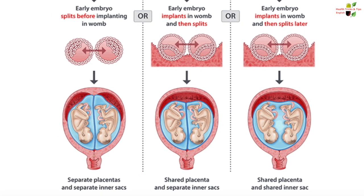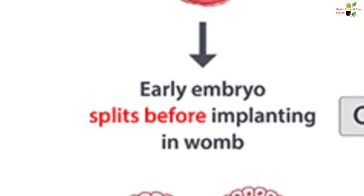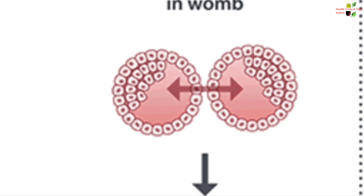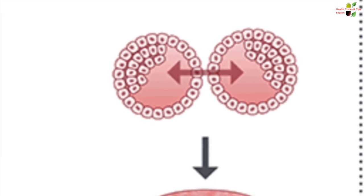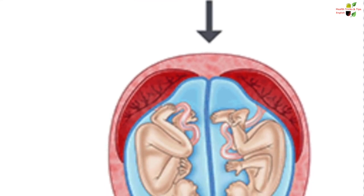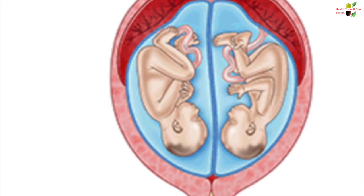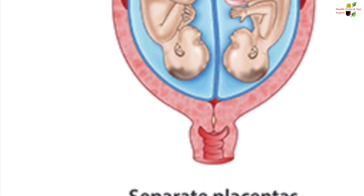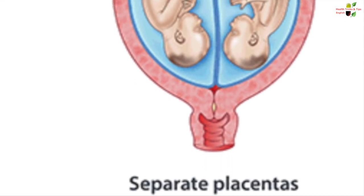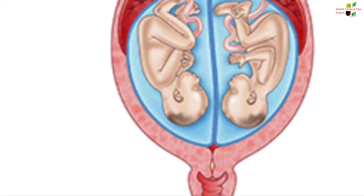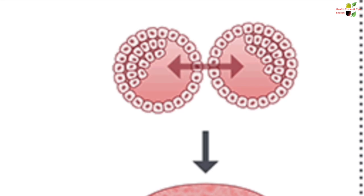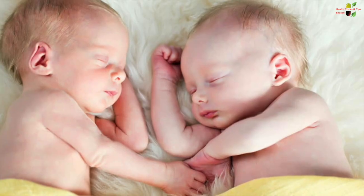The first category is that there is a possibility that before implantation, the embryo splits itself into two embryos and these two embryos will implant in the womb differently, behaving just like the fraternal twins. This type of identical twins will have separate placentas and separate amniotic sacs. But as they have come from the same fertilized egg, the sex of these twins will be the same — they will either be two girls or two boys.